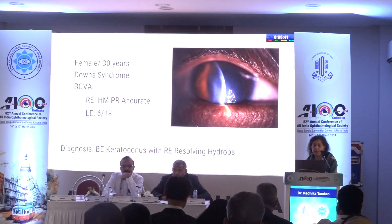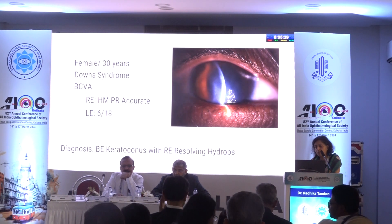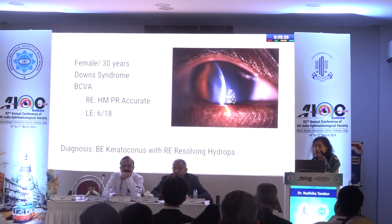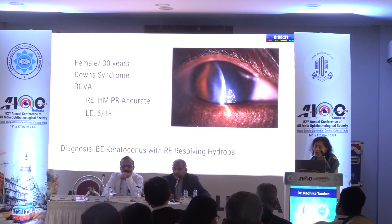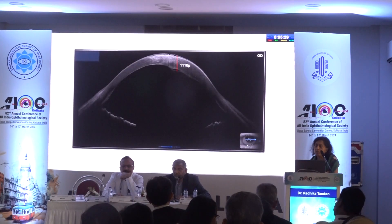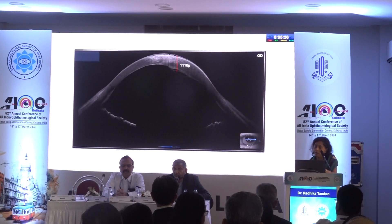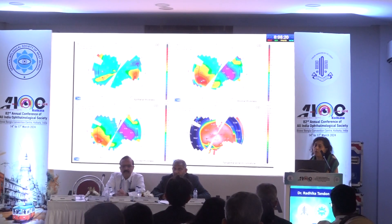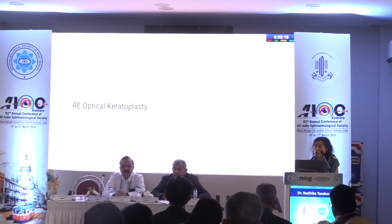Coming to a few case studies: here we have a 30-year-old female who is a known case of Down syndrome. She had hand movement vision and was diagnosed as a case of keratoconus with resolving hydrops. This is what we found on the ASOCT — there was a small pocket of Descemet's that was still detached and the cornea was still thick. This is the mapping that was done, and we had planned the patient for an optical keratoplasty.